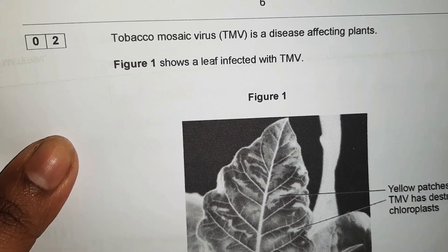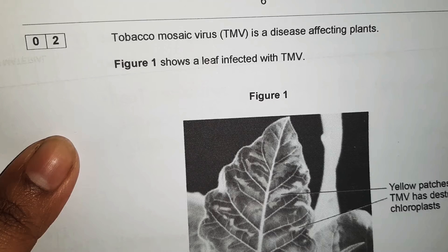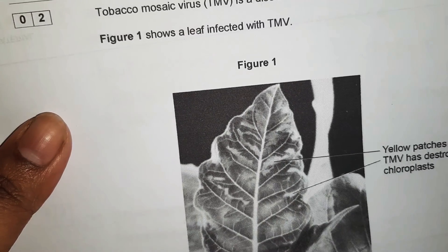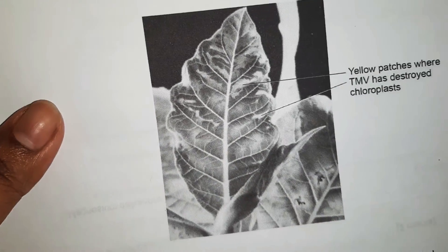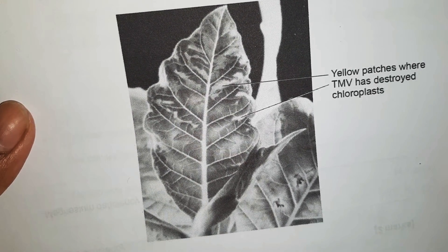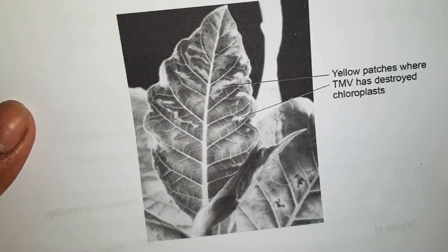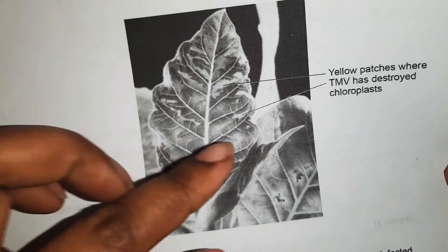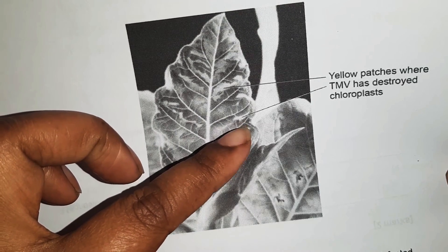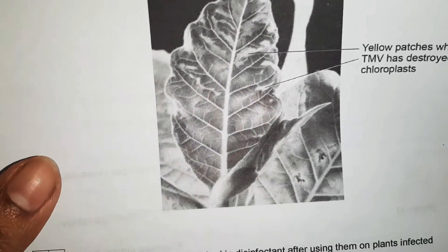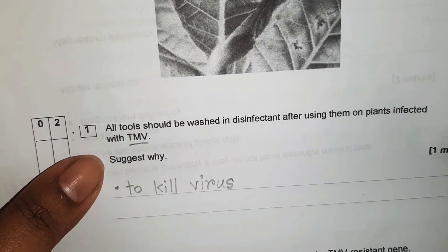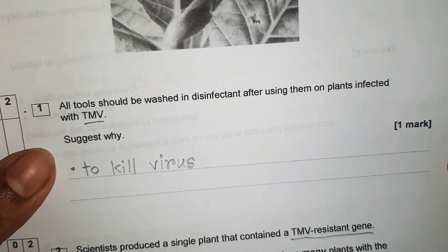Here is the tobacco mosaic virus. TMV is a disease affecting plants. Figure one shows a leaf infected with TMV. You can see the yellow patches where TMV has destroyed the chloroplasts — the affected areas are not green in color.